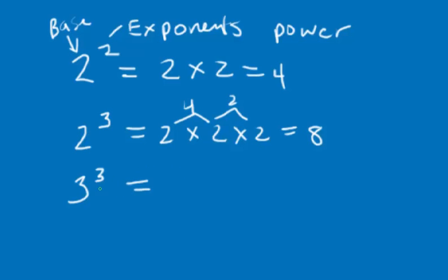Same thing with 3. 3 to the power of 3 just means 3 times 3 is 9, times another 3. So that's 9 times 3 equals 27. So 3 to the power of 3 equals 27.